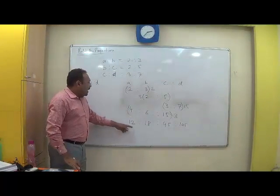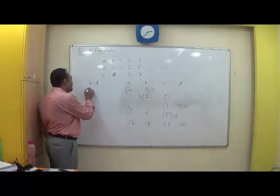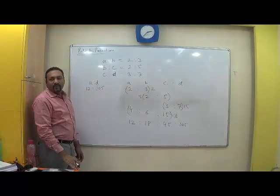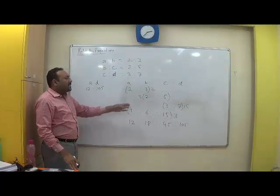So my ratio A is to D is 12 is to 105. Agreed? This is balancing of ratios.